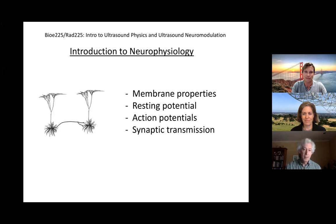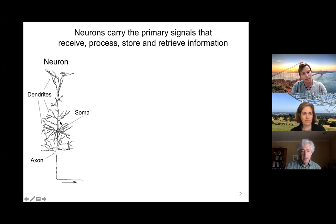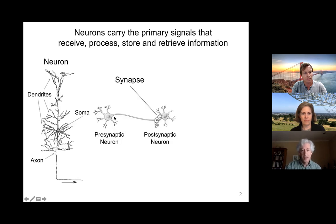I'm going to begin by mentioning the main parts of the nervous system, which are two types of cells. The first are neurons — the basic cells that carry primary signals, process and store information, and transmit information. Neurons are composed of dendrites where they receive synaptic input. This synaptic input is integrated and summed together in the region of the soma, where a decision is made whether to produce an electrical signal sent down the axon to the axon terminal. The places where neurons join each other are called synapses — the presynaptic neuron synapses upon the postsynaptic neuron. An electrical signal called an action potential is sent down the axon to the axon terminal and activates synapses to release neurotransmitter.